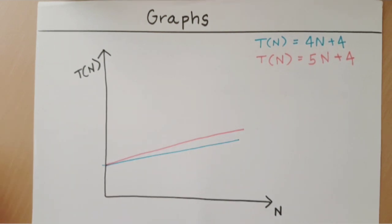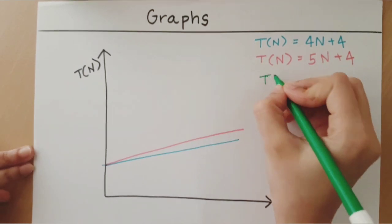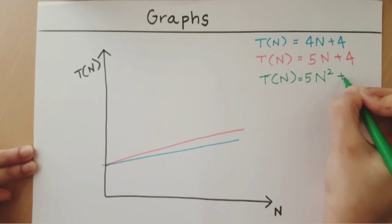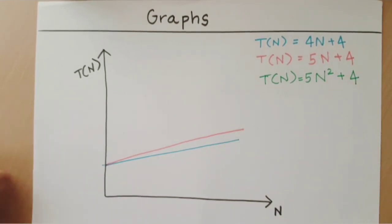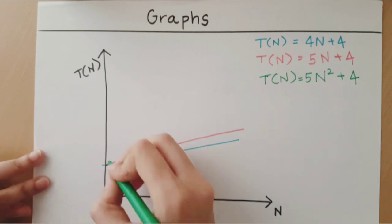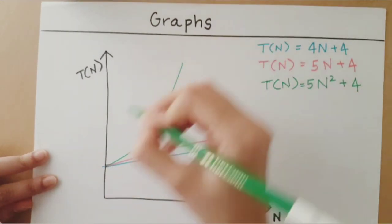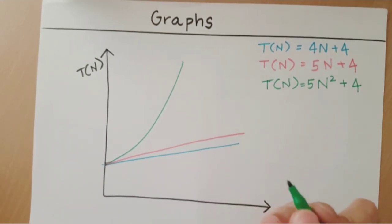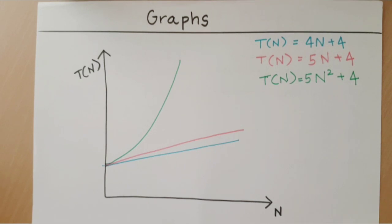Let's take an example of another function which has time say 5n square plus 4. In such a case, the plot of the graph would be something like this. As you can see, the third time, or the one which is shown in green, is time which becomes larger quadratically. The growth of the blue and red time is in linear fashion, but the green one grows quadratically.